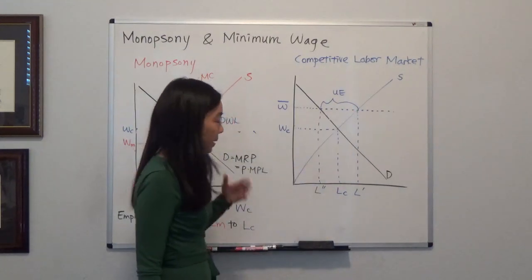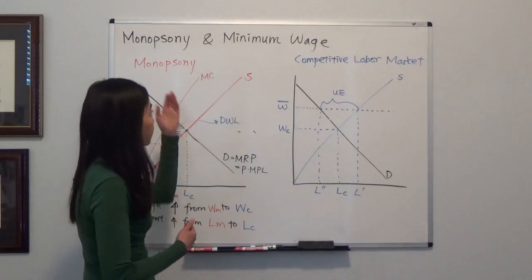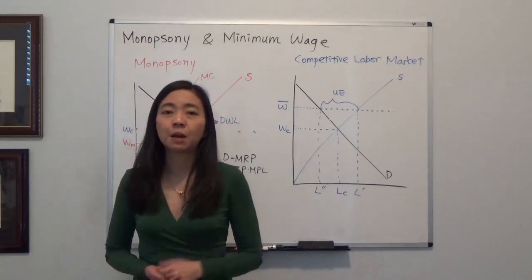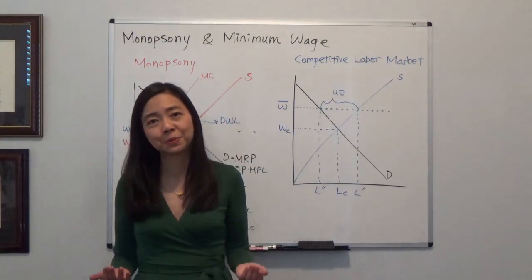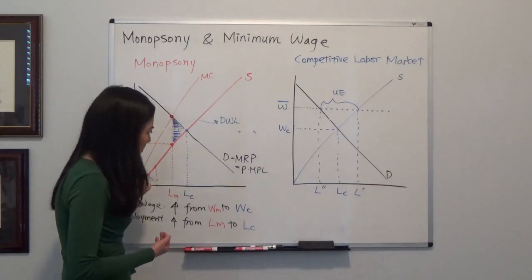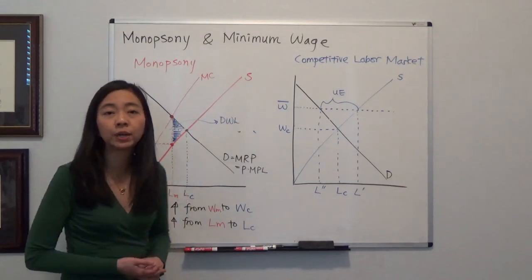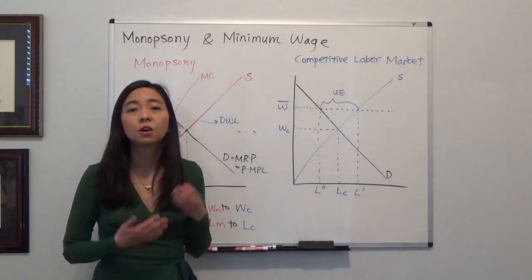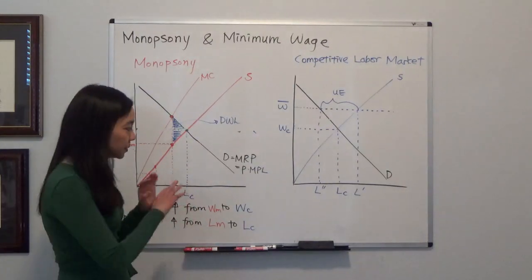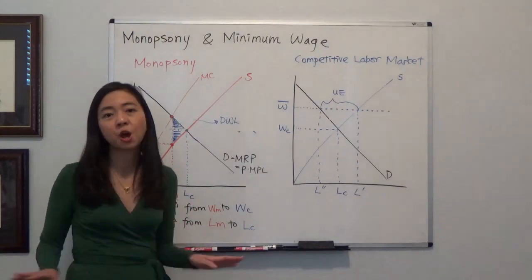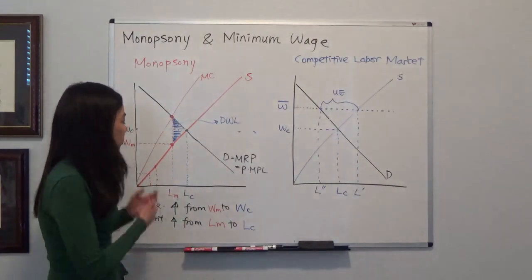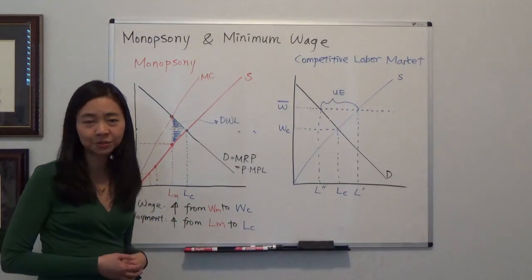Now the picture is going to change if we have monopsony. So we know that monopsony is the only buyer in the labor market. So in that case, a minimum wage is actually a good thing. We're going to see why. So suppose there's no minimum wage, no government regulation, and no labor union. So the monopsony can do whatever they want.